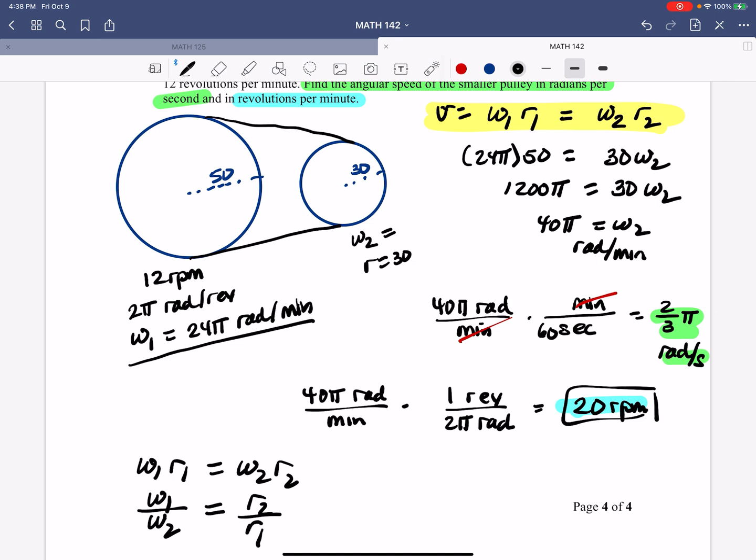So just notice that this went with 20 revolutions per minute. So 30 gave me 20, but 12 gave me 50. So if you multiply 20 by 30, you get the same thing as if you multiplied 12 by 50. Just a little interesting fact. But using the fact that they have the same linear velocity, we can totally solve this problem without too much effort.